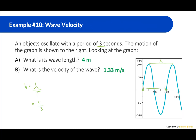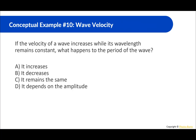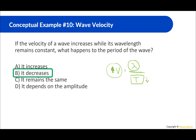If the velocity of a wave increases while its wavelength remains constant, what happens to the period? Looking at the formula — velocity equals wavelength divided by period — wavelength is staying the same but velocity is increasing. For the fraction to increase, the denominator must go down, so the period decreases.